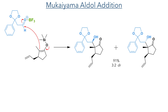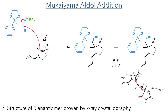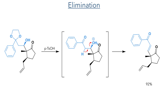This was then used in the Mukaiyama aldol addition. Boron trifluoride was used as a Lewis acid to promote this reaction, first coordinating to the aldehyde to make it more electrophilic and allowing the enol ether to attack. This formed the target aldol product in a 91% yield with a 3:2 mixture of diastereomers, as there was little control observed from the pendant allyl group. The structure of the R enantiomer could be proved by X-ray crystallography. Taking the target S enantiomer forward, reaction with tosylic acid promoted the elimination of the alpha-hydroxyl to produce the enone in a 92% yield.